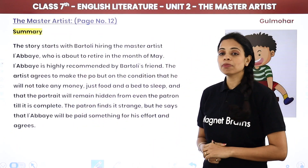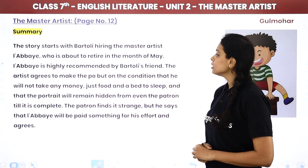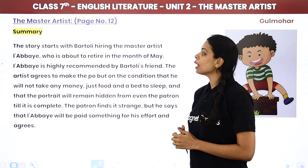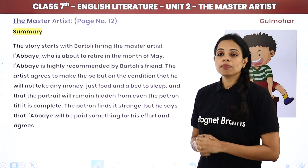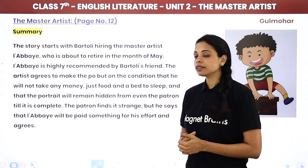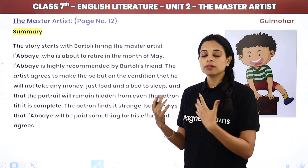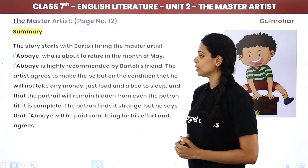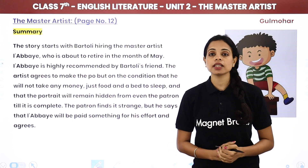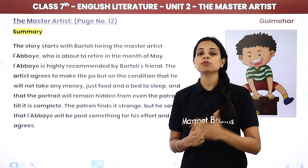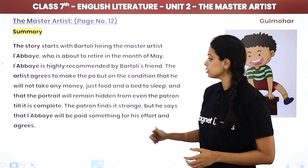The story starts with Baitoli, an Italian patron, hiring the master artist Libai, who is about to retire in the month of May. Libai is a famous artist highly recommended by Baitoli's friends, who say he is a very amazing artist. So Baitoli decides he should have a portrait painted by him, and the artist agrees to make the portrait.